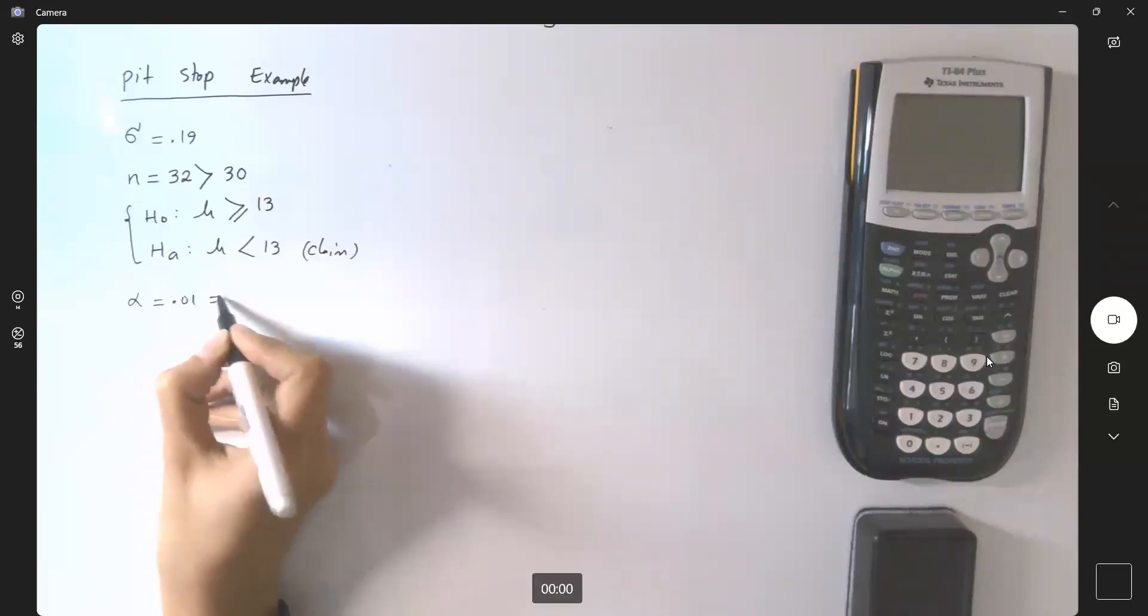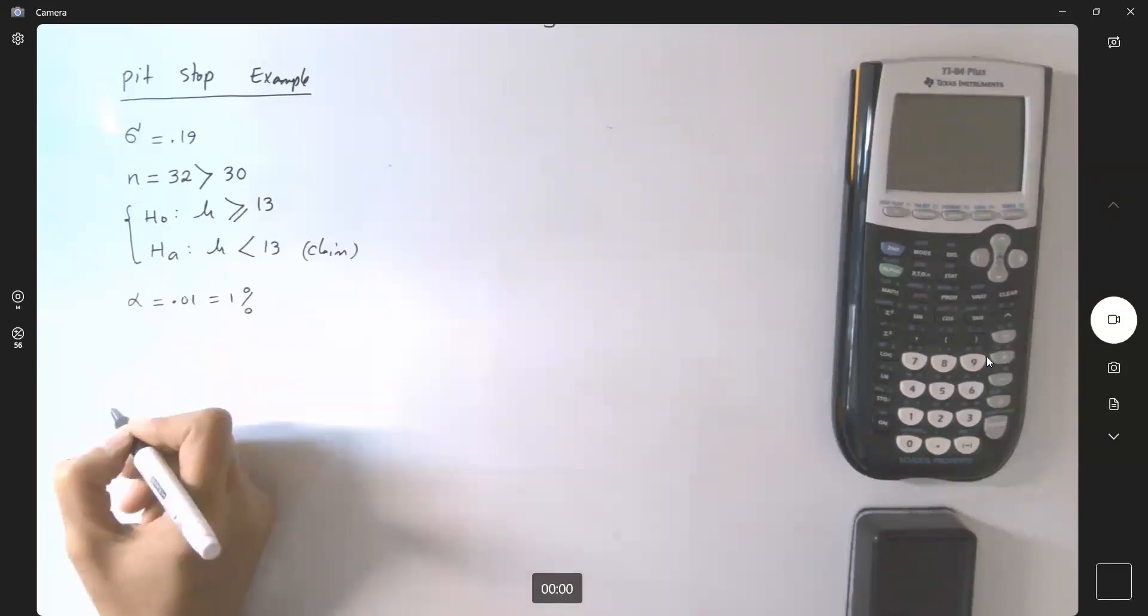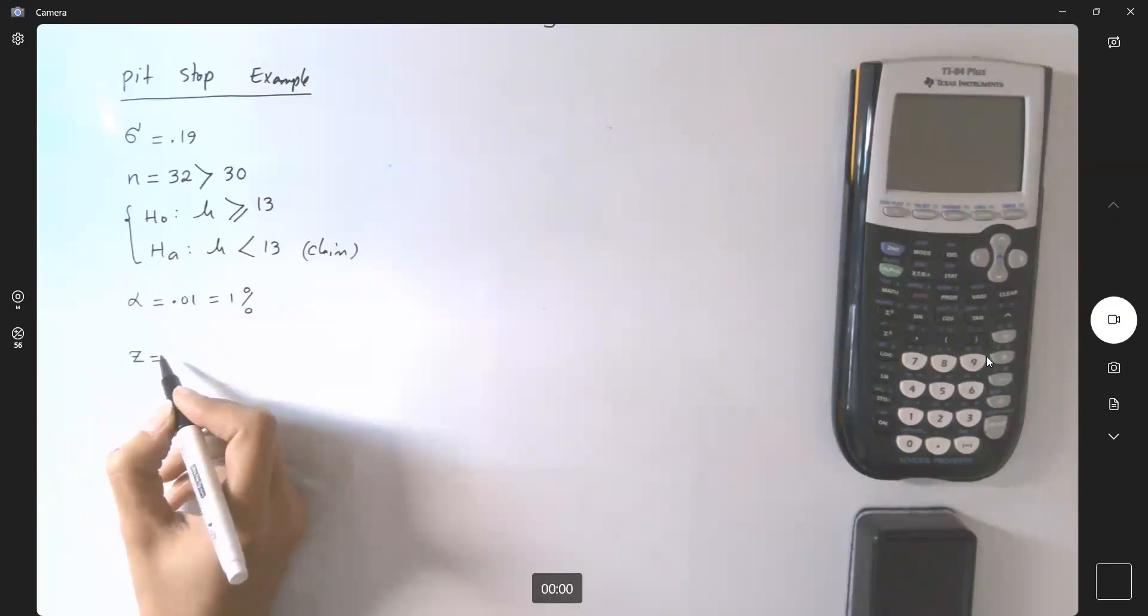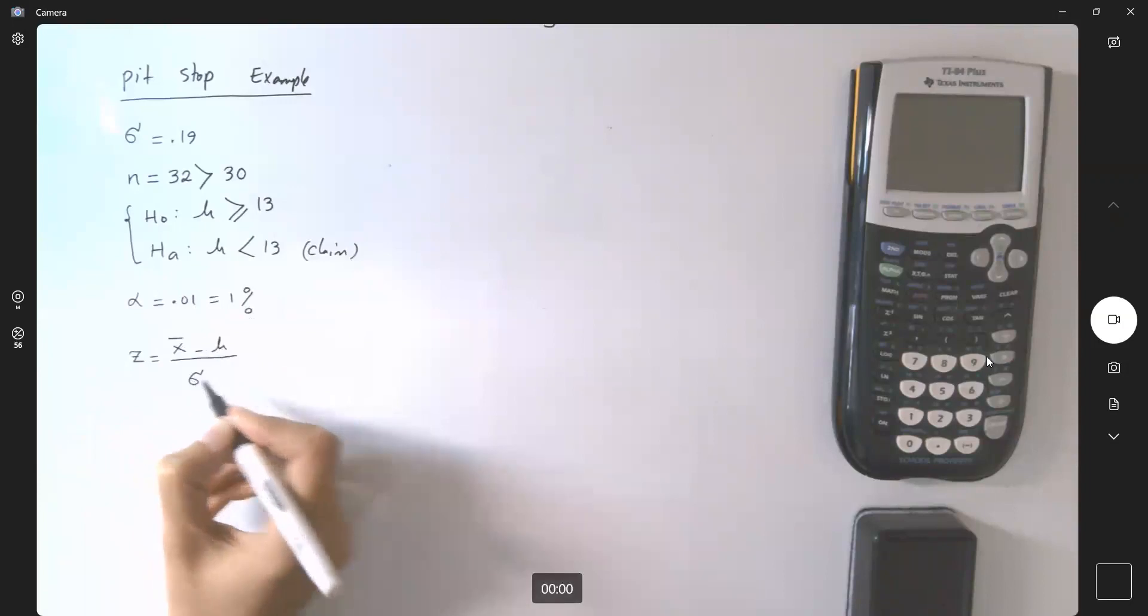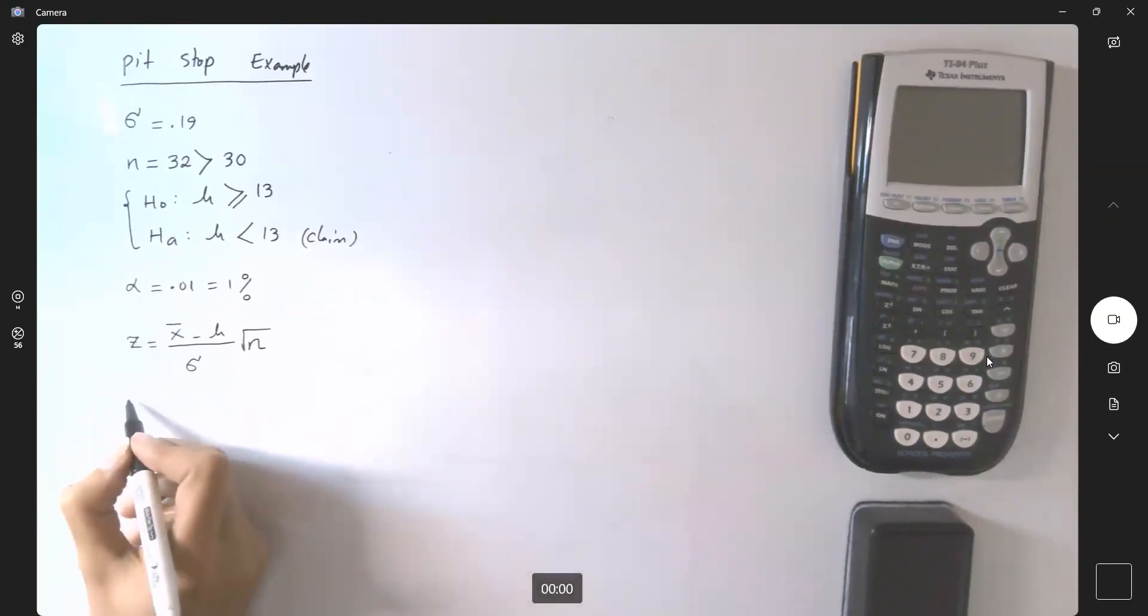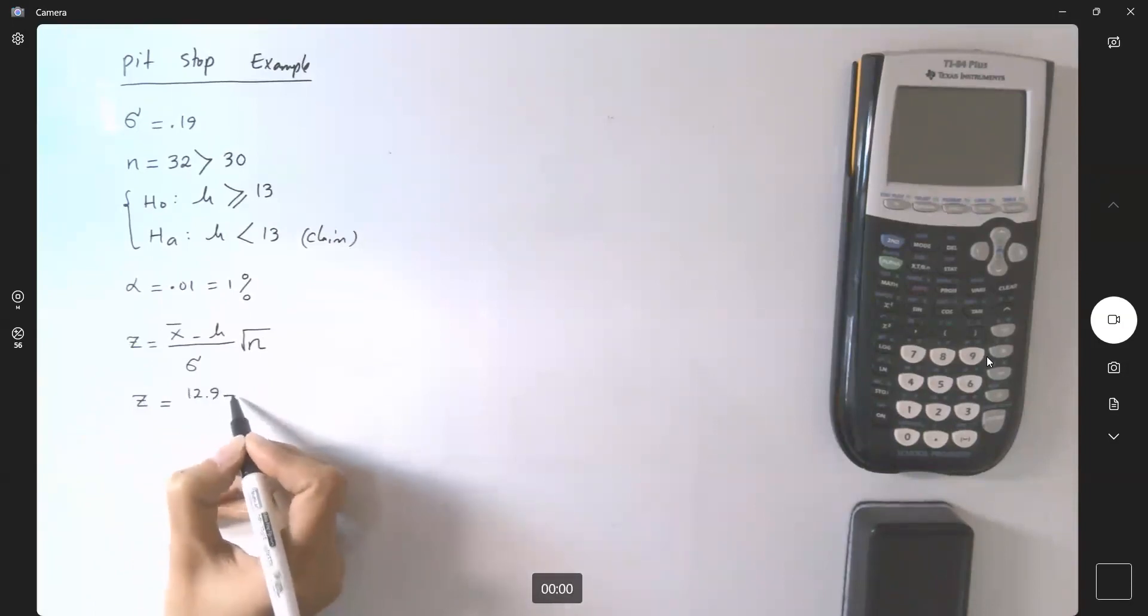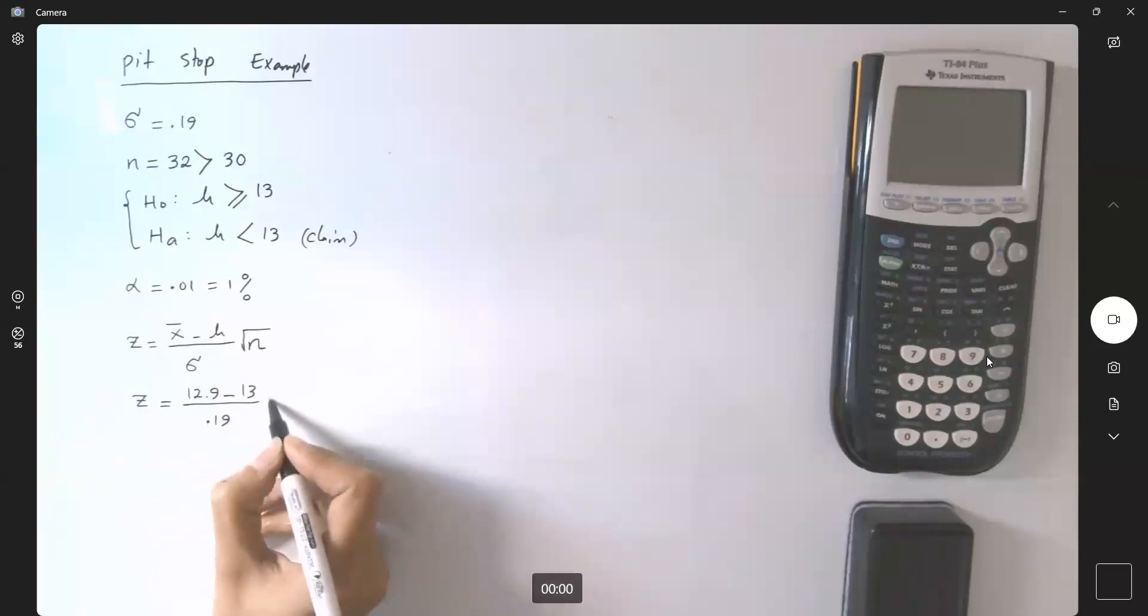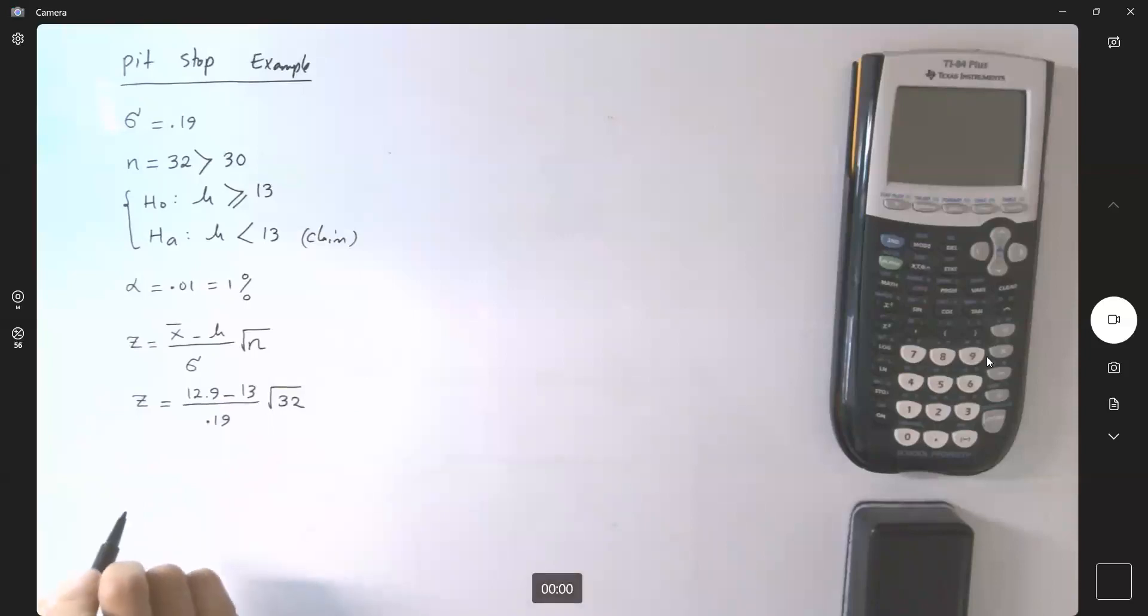Now we need to build z or standardized test statistic. It has a formula: x bar minus mean divided by sigma times square root of n. From the example, we have all of these pieces of information. Z is equal to 12.9 minus 13 divided by 0.19 times square root of 32.